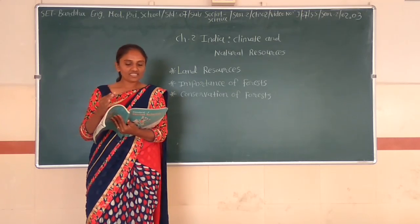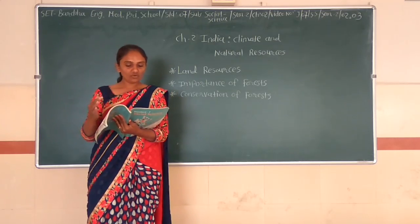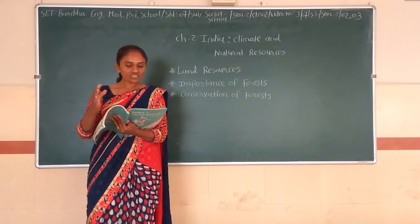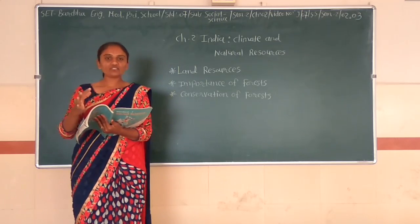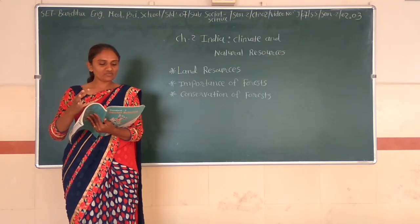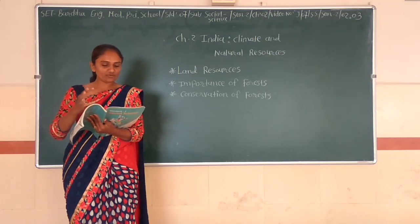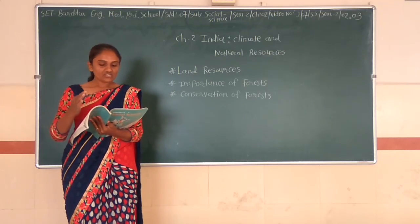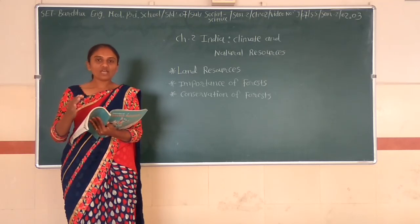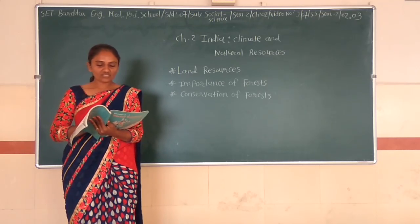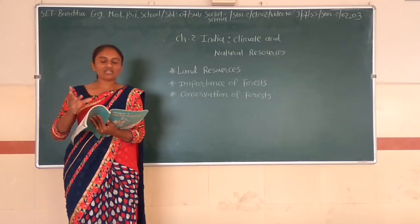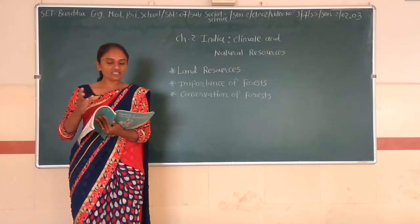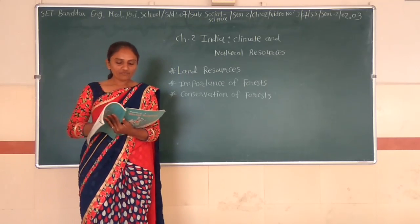These trees shed their leaves in autumn. The main trees of deciduous forests are Teak, Shaal, Nobani, Banyan, and Peepal.